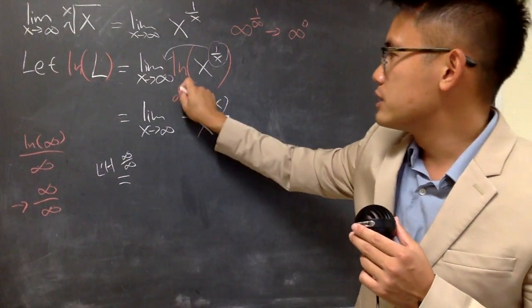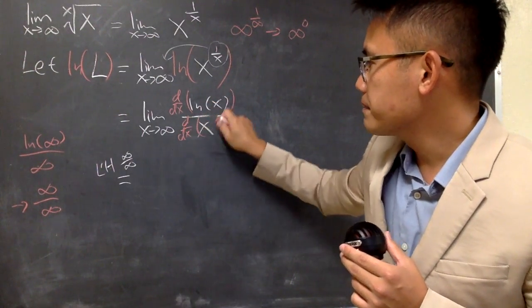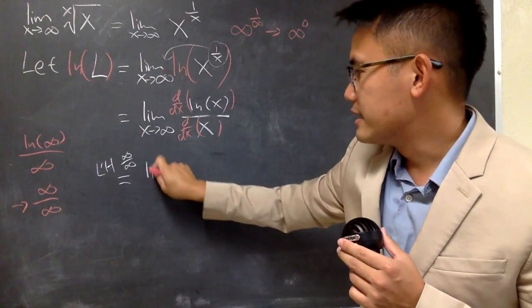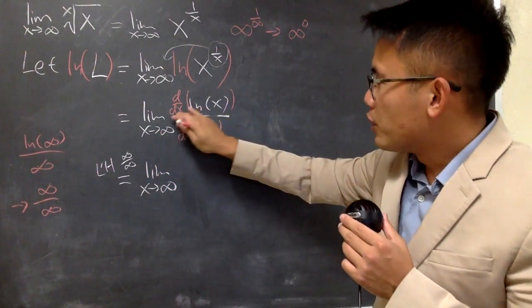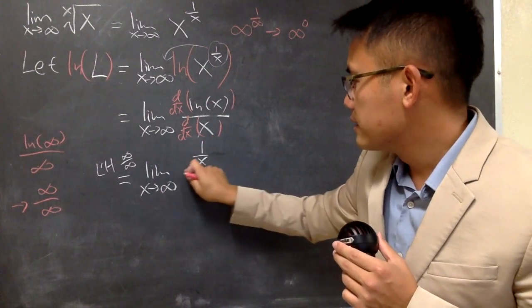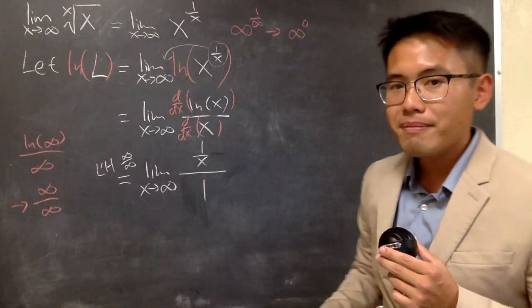And, I will just be differentiating the top and also differentiating the bottom. And, we see this is the limit as x approaching infinity. The derivative of ln x is 1 over x over. The derivative of x is just nicely equal to 1.